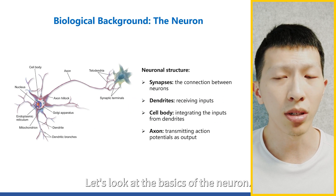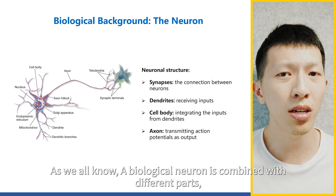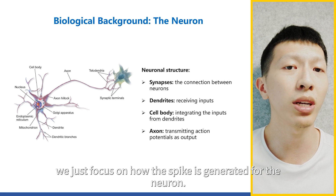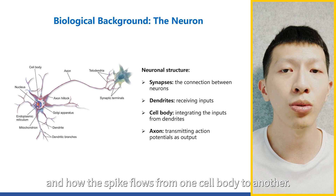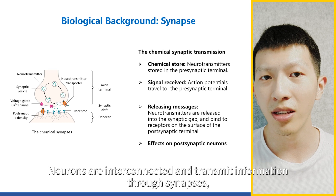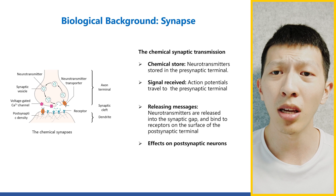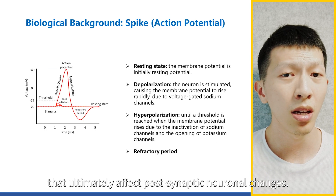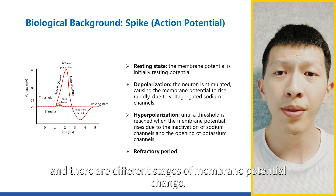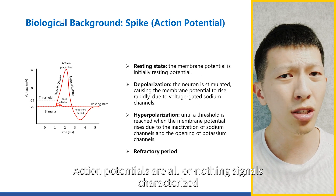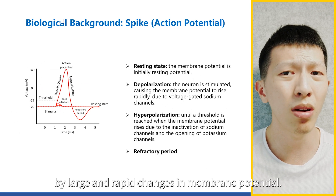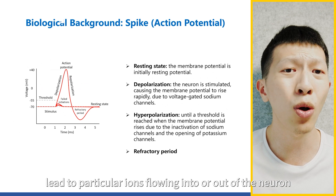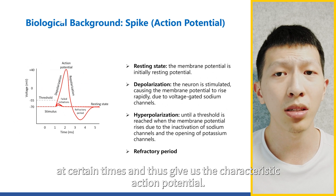Let's look at the basics of the neuron. A biological neuron is composed of different parts — for example, synapses, dendrite, cell body, and axon. In this topic, we focus on how the spike is generated and how it flows from one cell body to another. Neurons are interconnected and transmit information through synapses, mostly chemical synapses. Action potentials are generated by the cell body of neurons, and there are different stages of membrane potential change.